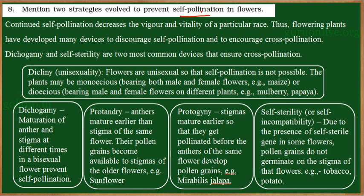What happens if self-pollination occurs continuously? When self-pollination occurs, it decreases the vigor and vitality of a particular race. The strength of the plant will be reduced, and since there are no variations, there would be less chances for these plants to survive if any changes occur in the environment. Nature always selects cross-pollination over self-pollination. Flowering plants have developed many devices to discourage self-pollination and encourage cross-pollination, and these devices are called outbreeding devices.